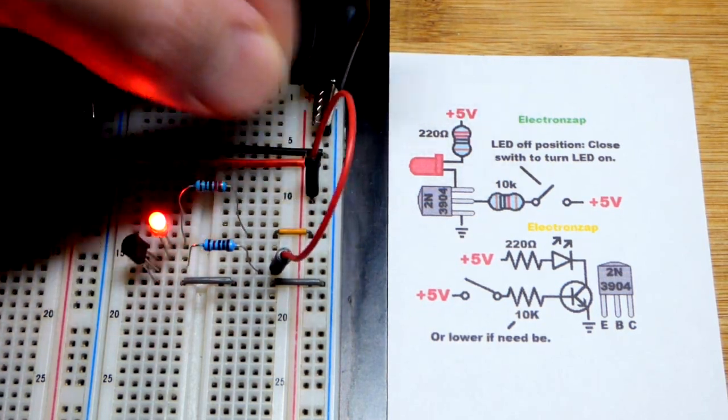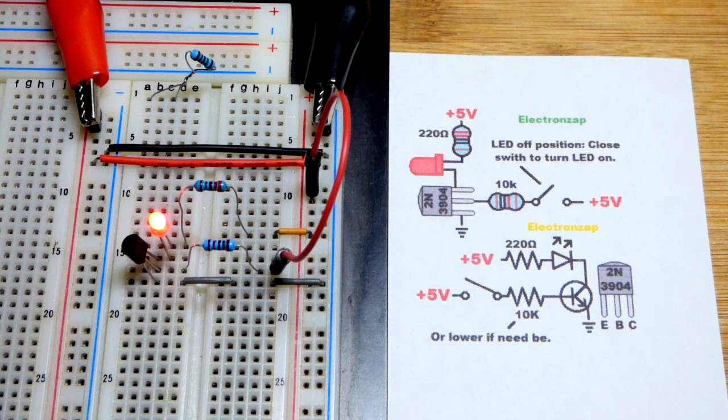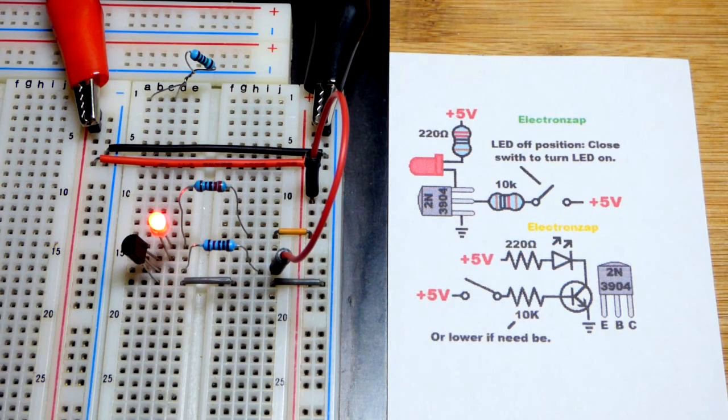So we got a relatively high value resistor right there. So a little bit of current to the base is now letting the transistor conduct fully.